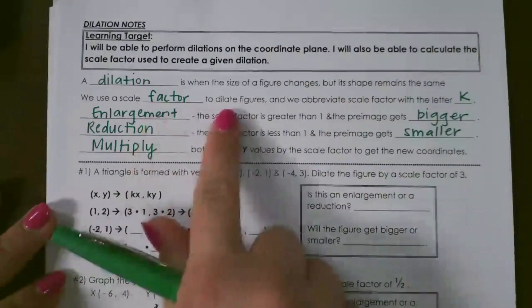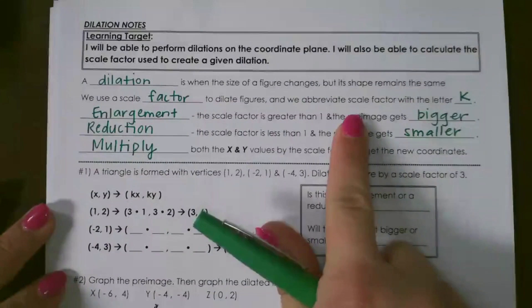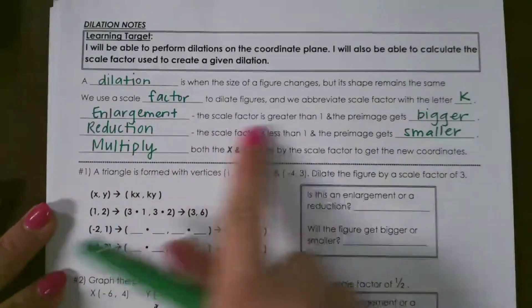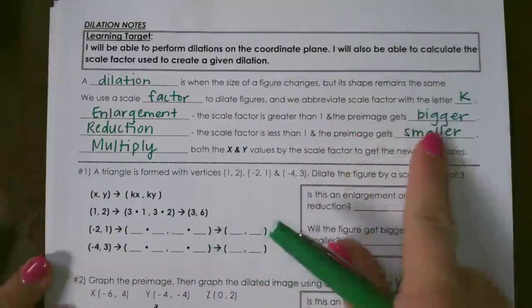We use a scale factor to dilate figures, and we abbreviate the scale factor with the letter K. Enlargement is when the scale factor is greater than 1, and the pre-image gets bigger.